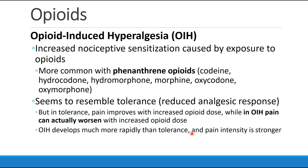One last point in this section is about opioid-induced hyperalgesia — the notion that patients who are exposed to opioids may actually have increased sensitivity at their nociceptive receptors. This seems to be more common with the phenanthrene opioids: drugs like codeine, hydrocodone, hydromorphone, morphine, oxycodone, and oxymorphone. It resembles tolerance in that the patient gets a reduced analgesic response after a given dose of opioid. But in tolerance, if you give more opioids the pain should improve. In opioid-induced hyperalgesia, the pain can actually worsen with increased opioid dosing. Also, opioid-induced hyperalgesia develops much more rapidly than tolerance, and the pain intensity is stronger.